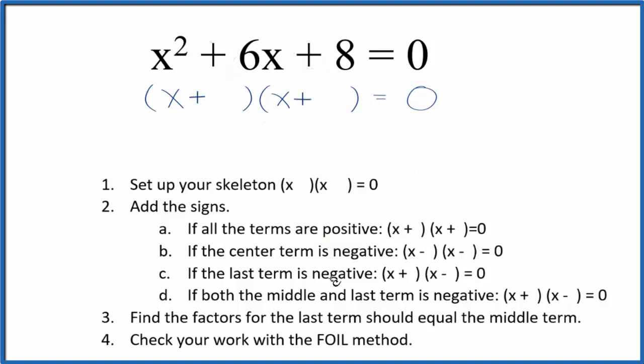Once we do that, we can find the factors for that last term, the 8 here, that should equal the middle term when we add them up. So if we think about 8, we could say 8 times 1 equals 8, and how about 2 times 4, that equals 8. I think those are the only factors.